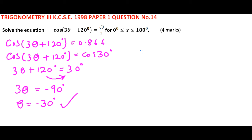The other one: cosine is positive in the fourth quadrant, so cos(3θ + 120°) is the same as cos(360° - 30°). So we get 3θ + 120° = 330°.